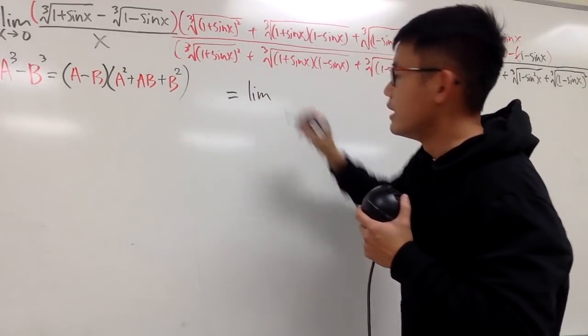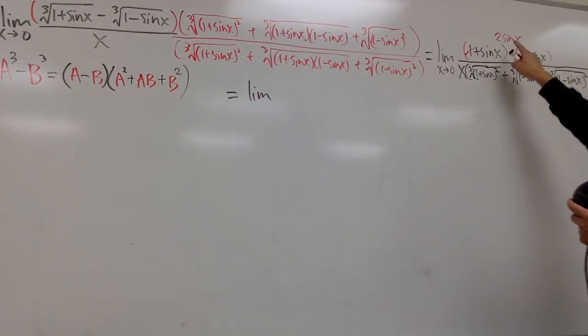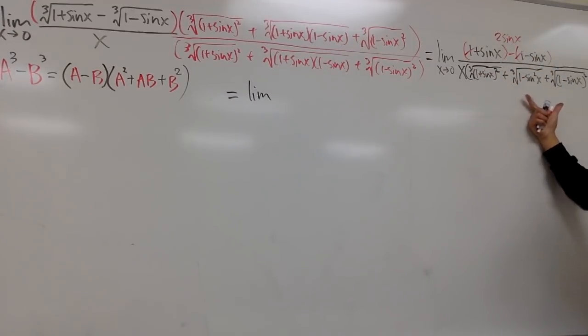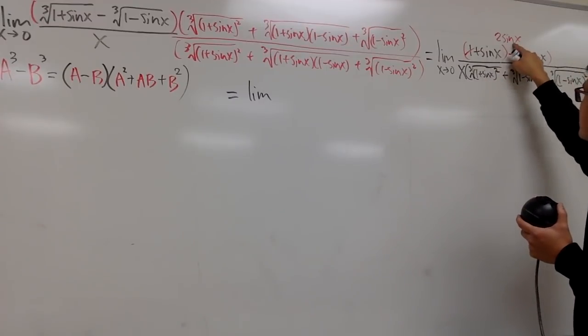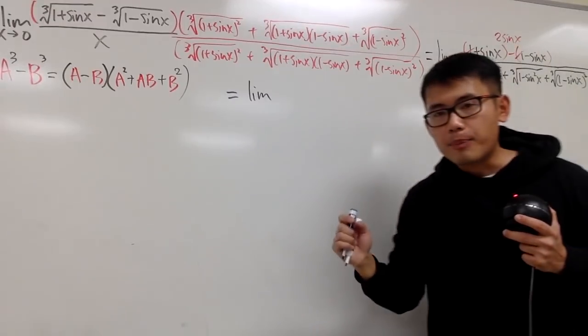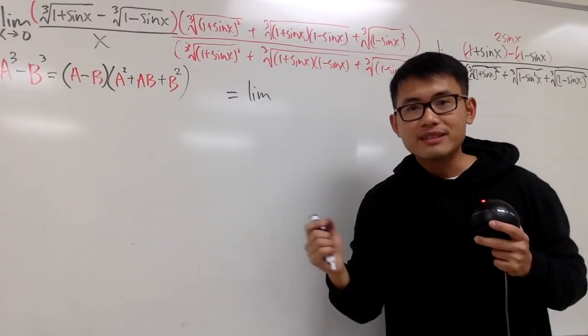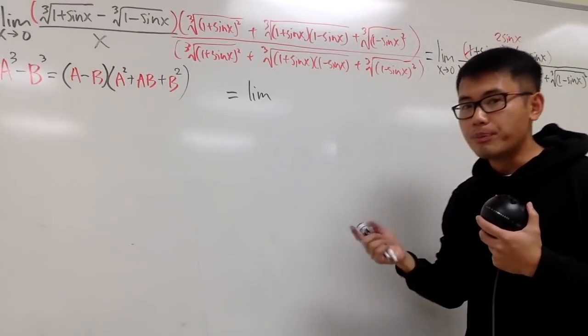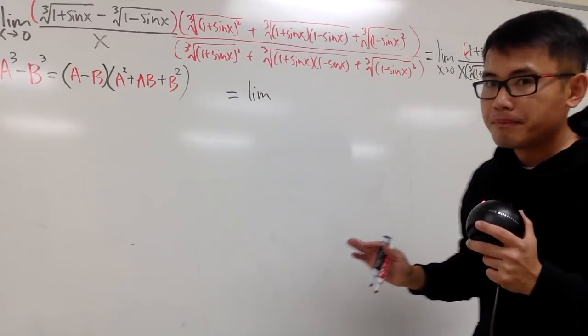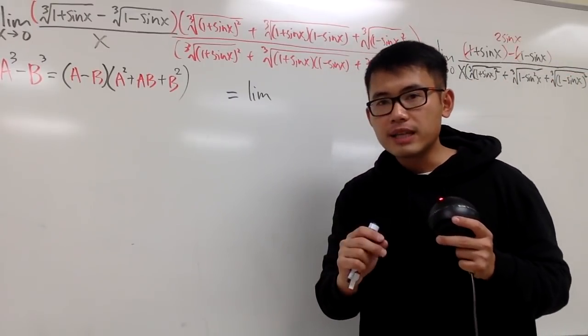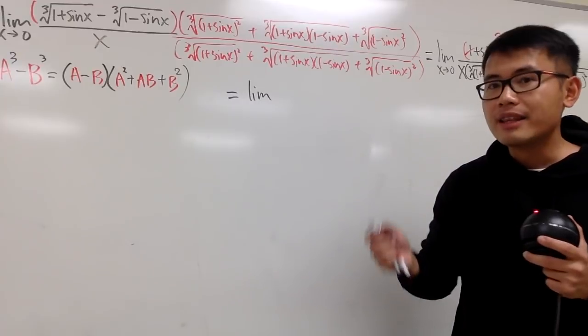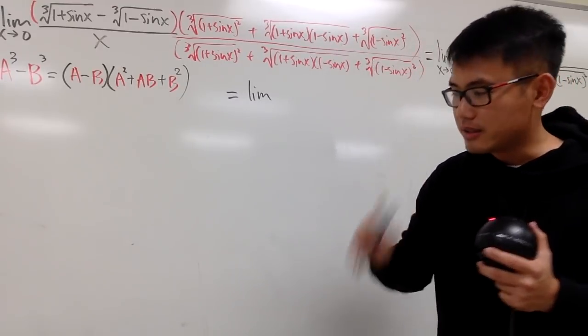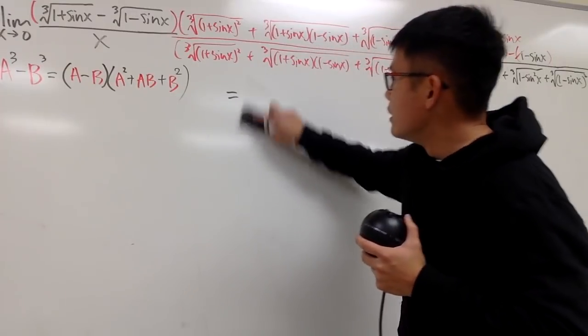On the bottom, I have (1 + sin x)(1 - sin x), which is just 1 - sin^2 x. Yes, that's cos^2 x, doesn't really matter. Let me just write down 1 - sin^2 x. Here is the deal. I will write this down. This right here is going to be the limit. On the top, I have 2 sin x over x times this quantity. And sin x over x, we know that approaches 1 when x is approaching to 0.